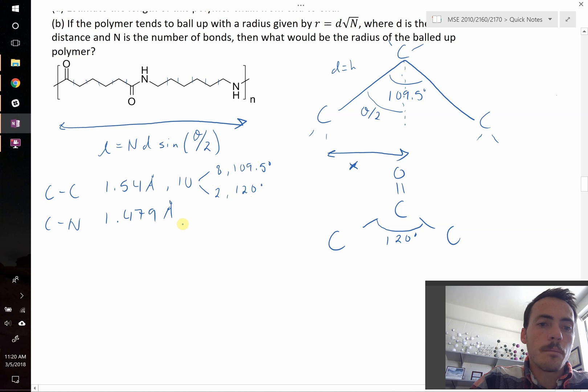Now, of our carbon-nitrogen bonds, if you count them up, there are 4, 1, 2, 3, 4, right? And you have 2 of each, 2 and 2, 2 with 109.5 degrees and 2 with 120 degrees.